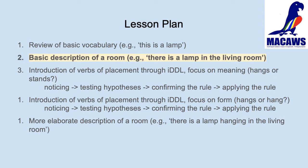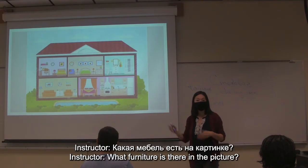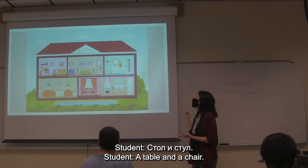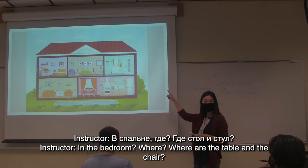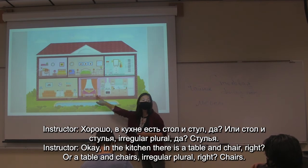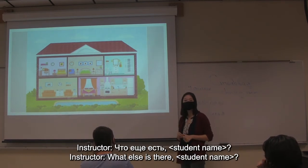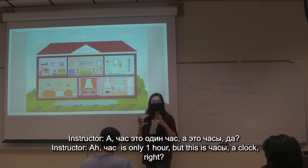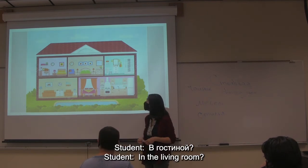In the following video clip, you will see the second stage of vocabulary activation, where students are asked to describe rooms by listing the furniture items they see in the image. The instructor asks: 'And what kind of furniture is on the picture?' Students respond mentioning a stool and table. The instructor confirms: 'Good. In the kitchen there is a table and a stool.' Students also identify a clock — 'It's hours' — and the instructor continues eliciting responses about other items in the room.